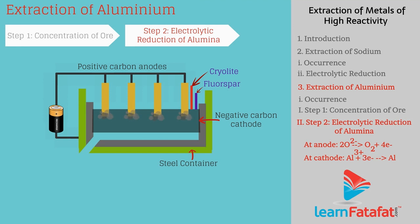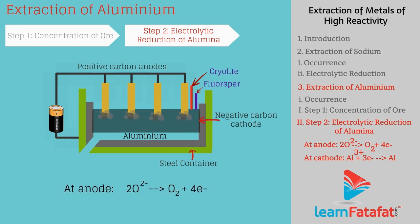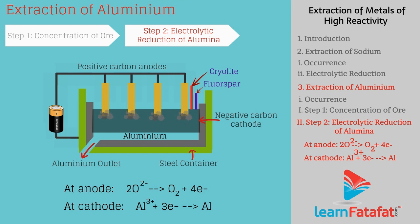During electrolysis, oxygen is liberated at the anode and aluminium is formed at the cathode. At anode: 2O²⁻ → O₂ + 4e⁻. At cathode: Al³⁺ + 3e⁻ → Al. Aluminium sinks to the bottom of the tank and can be removed periodically. The oxygen reacts with carbon to form carbon dioxide, and since the anode gets oxidized, its quantity reduces over time and it must be replaced periodically.